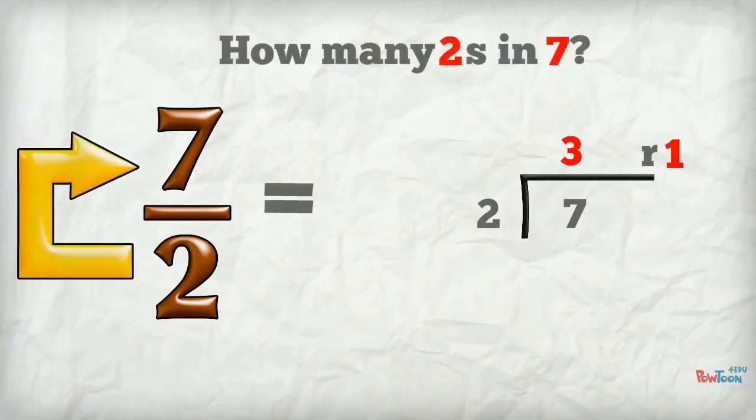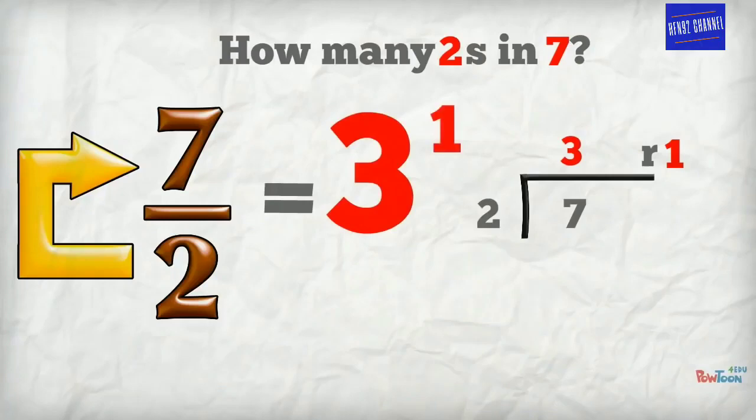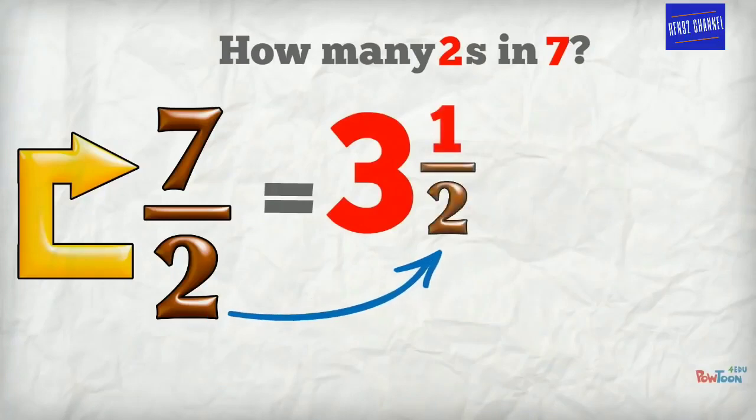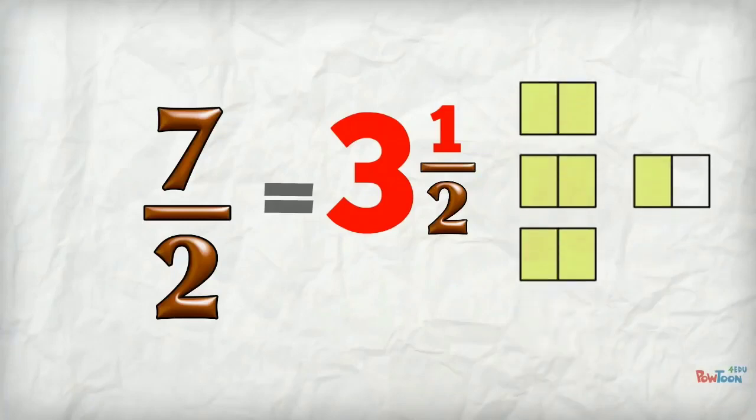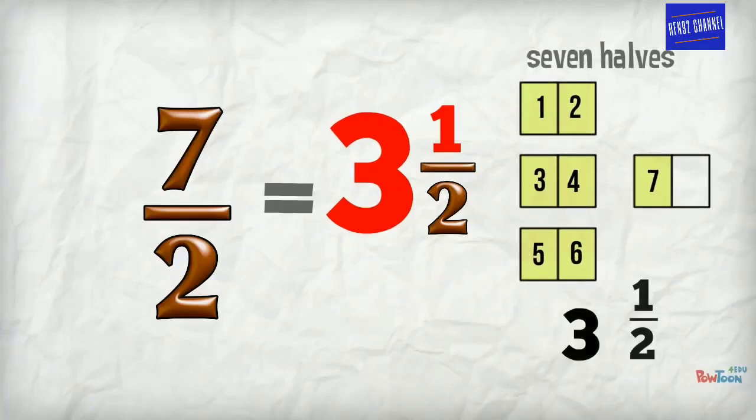Let's do that again. How many twos in seven? Three twos are six, remainder one. Put that over the original denominator of two and we're done. And proving it using a diagram. Seven halves is three wholes and one half.